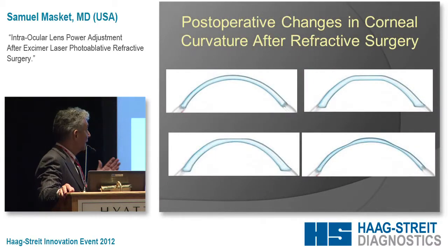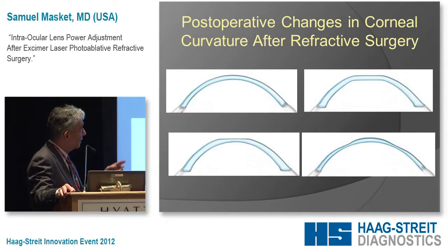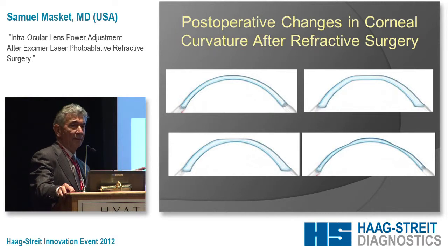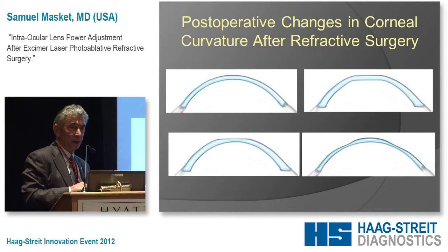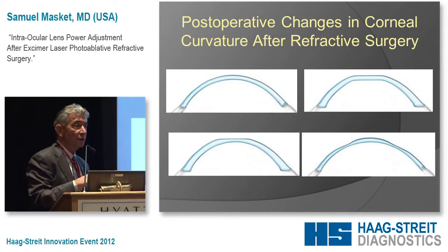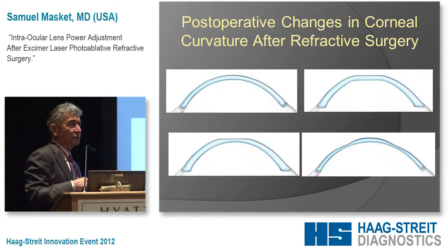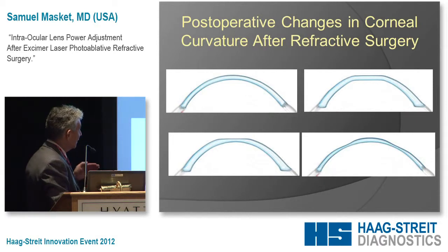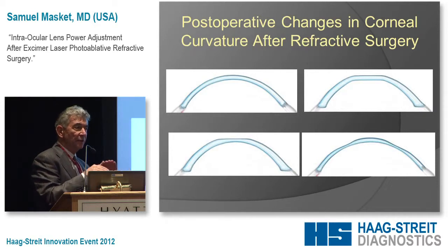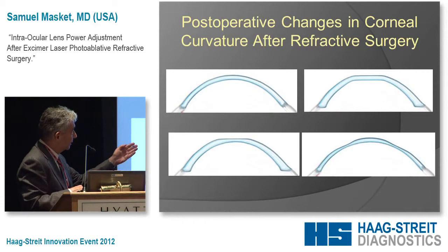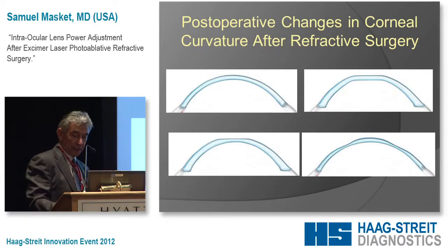Looking at these schematically: an untreated eye has anterior and posterior corneal curvatures that are quite parallel and similar. Radial keratotomy or incisional surgery weakens the peripheral cornea and flattens the central cornea, but the surfaces remain roughly parallel — the relationship between anterior and posterior curvatures is unchanged. In contrast, myopic photoablative procedures effectively plane off the anterior surface without affecting the back surface, creating a difference in that relationship. Hyperopic photoablative procedures steepen the anterior surface while leaving the posterior cornea unchanged, altering those relationships in a different way.